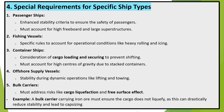Special requirements for specific ship types. Passenger ships require enhanced stability criteria to ensure passenger safety and must account for high freeboard and large superstructures. Fishing vessels have specific rules to account for operational conditions like heavy rolling and icing. Container ships must consider cargo loading and securing to prevent shifting, and must account for high centers of gravity due to stacked containers. Offshore supply vessels must maintain stability during dynamic operations like lifting and towing. Bulk carriers must address risks like cargo liquefaction and free surface effect. For example, a bulk carrier carrying iron ore must ensure the cargo does not liquefy, as this can drastically reduce stability and lead to capsizing.